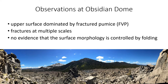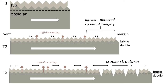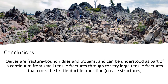Observations at Obsidian Dome show that the upper surface is dominated by fractured finely vesicular pumice, fractures occur at multiple scales, and there is no evidence that the surface morphology is controlled by folding. Based on these observations, we can construct a simple interpretive cartoon illustrating what was happening during emplacement. At T1, the ductile obsidian core drives emplacement while the FVP surface is dominated by tensile fracturing. At T2, continued extension from vent to margins occurs as the lava is emplaced; mode 1 tension fractures develop in the brittle FVP zone accompanied by tuffisite venting, and the large-scale ridges and troughs — or ogives — created by tensile fracturing are what is detected by aerial imagery. At T3, even further extension occurs and the largest fractures begin to appear at the surface; only the deepest fractures penetrate through the brittle-ductile transition to create crease structures.